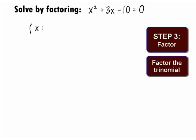This is a trinomial that will factor as x plus 5 times x minus 2, so we will have the equation x plus 5 times x minus 2 equals 0.